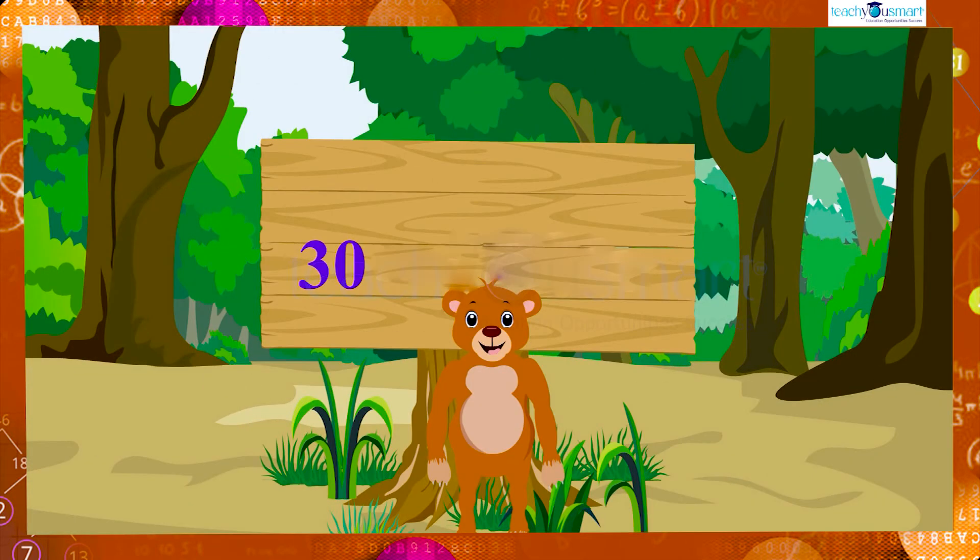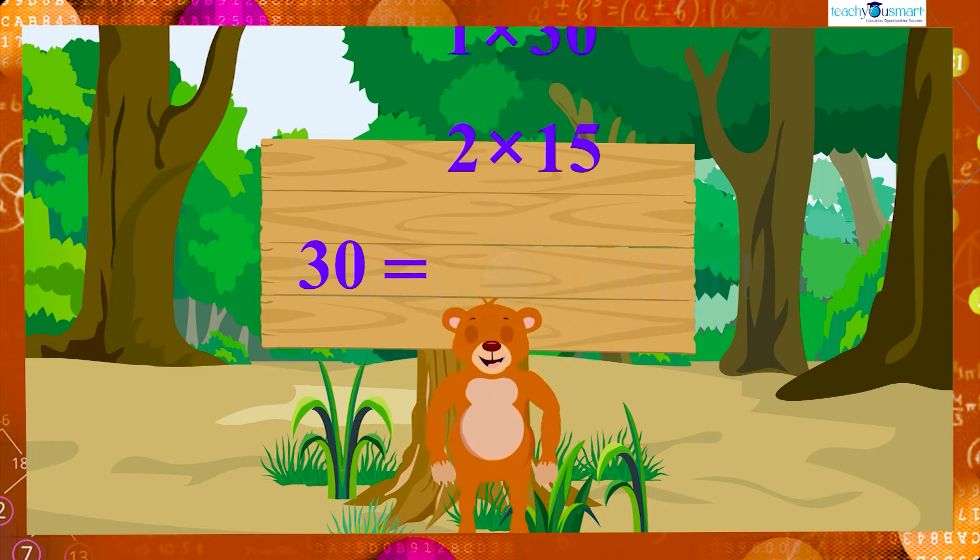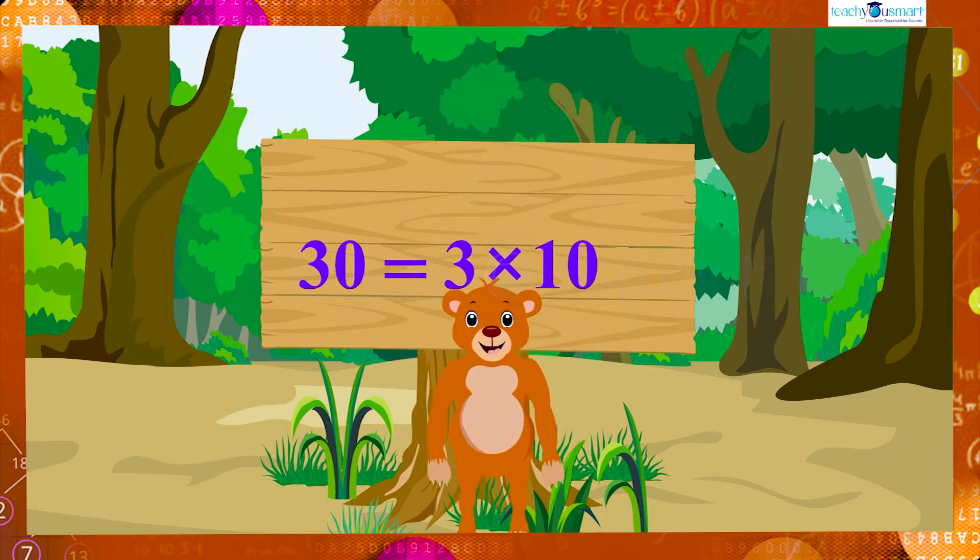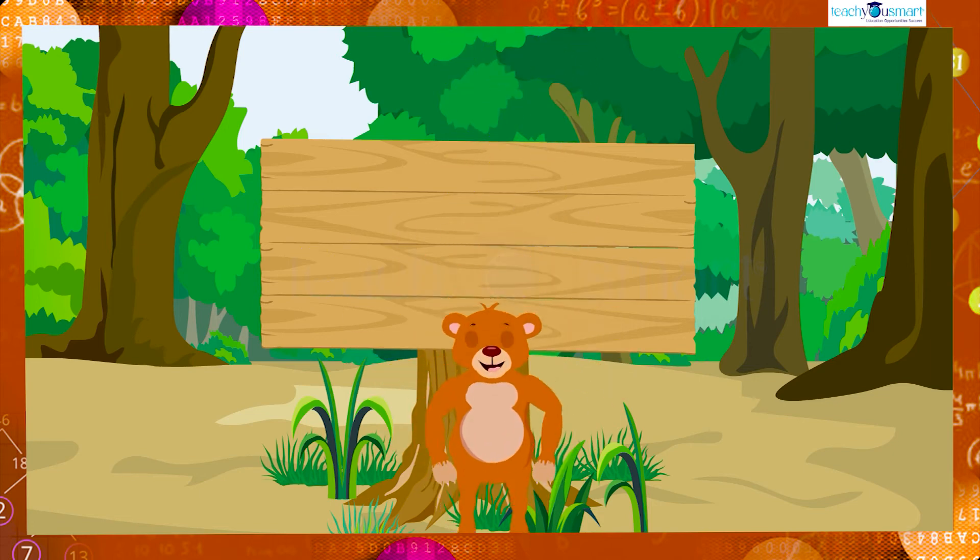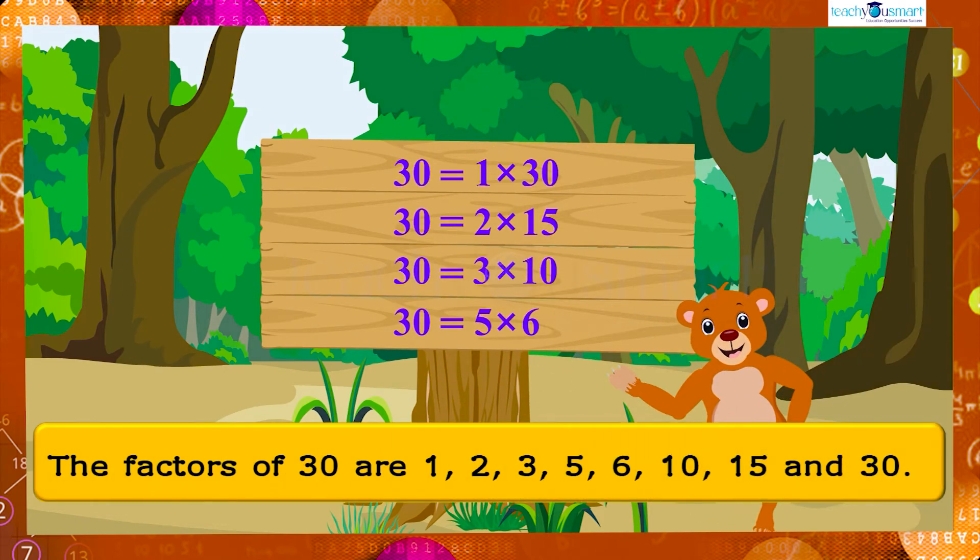Let's take another number: 30. It can be factorized as 30 is equal to 1 multiplied by 30, or 30 is equal to 2 multiplied by 15, or 30 is equal to 3 multiplied by 10, or 30 is equal to 5 multiplied by 6. Therefore the factors of 30 are 1, 2, 3, 5, 6, 10, 15, and 30.